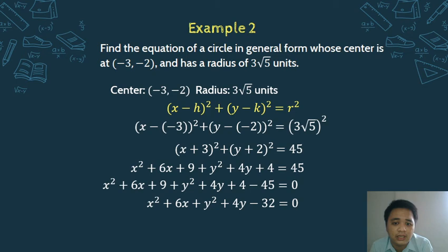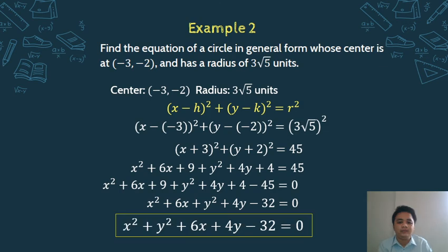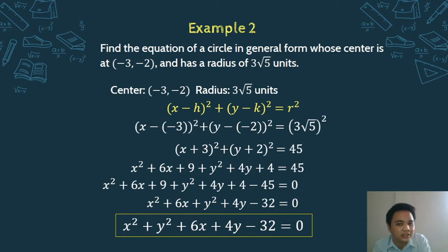As the last step, arrange in the standard general form: x² + y² + Dx + Ey + F. The final answer is: x² + y² + 6x + 4y − 32 = 0.